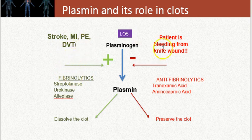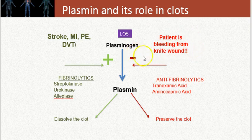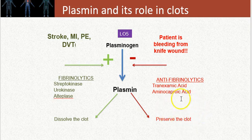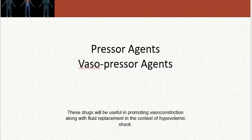On the flip side, for patients bleeding from a knife wound or gunshot wound, we want to inhibit the plasminogen cascade — that's the right side of the diagram in red. We use antifibrinolytics here: when this cascade is inhibited, we preserve the clot. So the treatment strategy for patients undergoing dramatic blood loss is to induce clotting and stop the bleeding.